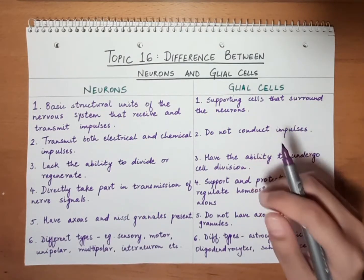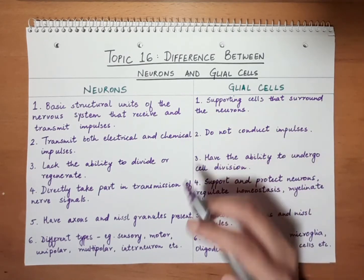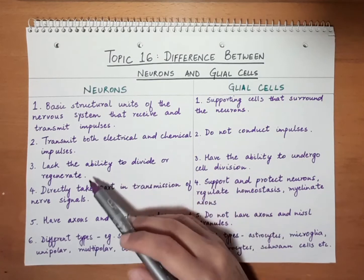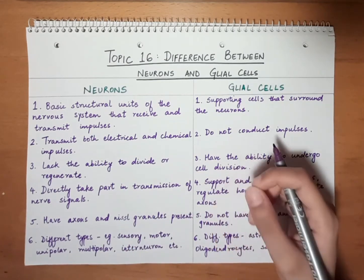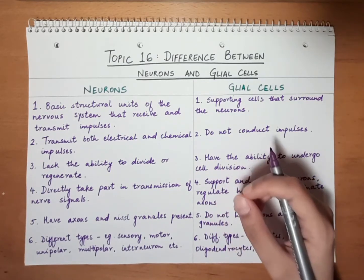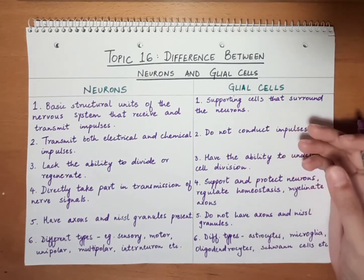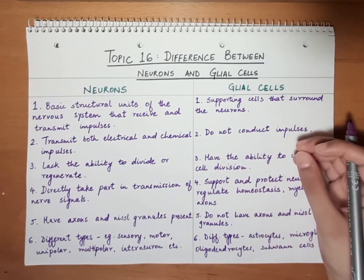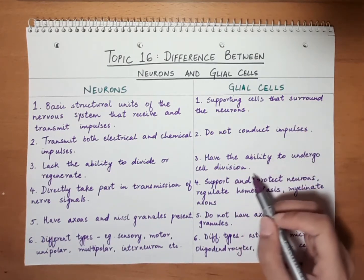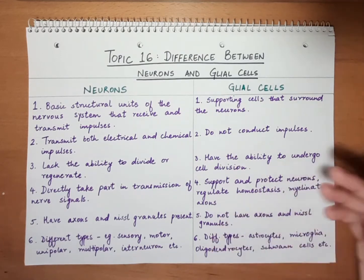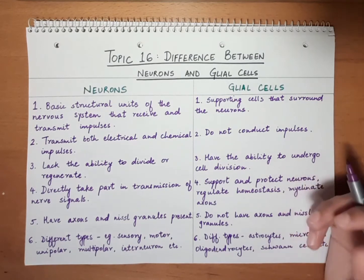Thirdly, coming to the cell division aspect: neurons lack the ability to divide or regenerate. Once neurons are fully mature, they cannot undergo any kind of division to give rise to other neurons or other cell types. But on the other hand, glial cells have the ability to undergo cell division — even with age, they can still divide and regenerate.